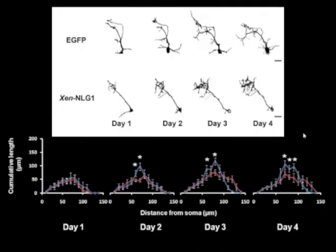Over four days, this leads to the formation of small but complex and compact dendritic arbors.